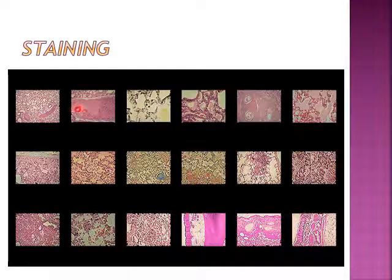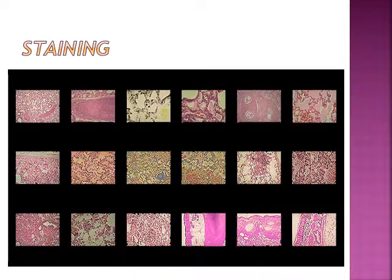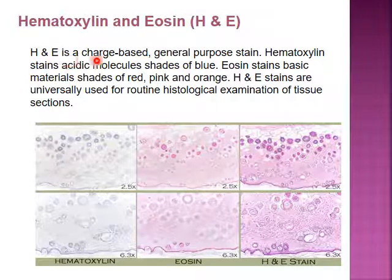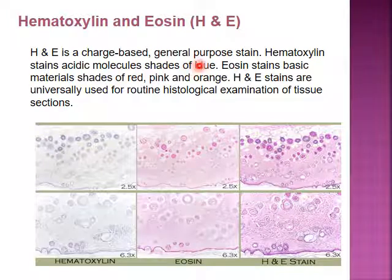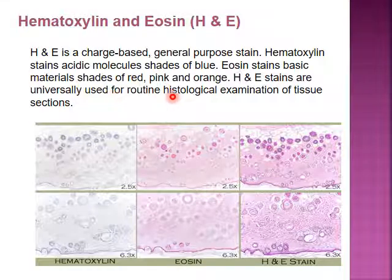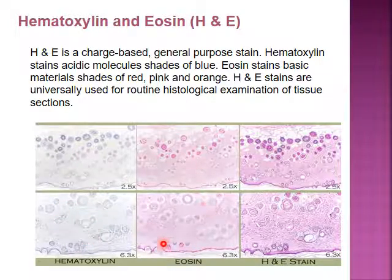Staining is done using H&E stain or special stains in histochemistry. We usually use hematoxylin and eosin — H&E stain — in oral histology and oral pathology. H&E is a charge-based general purpose stain. Hematoxylin stains acidic molecules shades of blue, while eosin stains basic material shades of red, pink, or sometimes orange. H&E stain is universally used for routine histological examination of tissue sections.